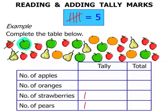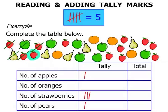Next one's an apple, so in the apple row let's make that mark. Then a strawberry in the strawberry row, then another strawberry, and another strawberry — so we're up to four strawberries. The next time we get another strawberry, we'll put that line across.